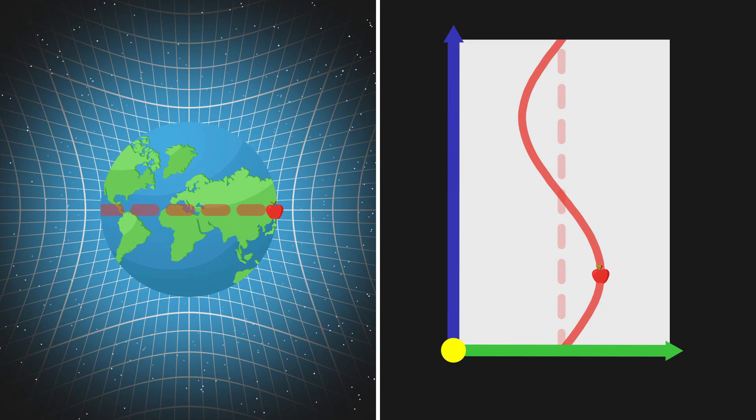However, since spacetime is completely flat at the center, nothing stopped the object there, causing it to overshoot the center. Eventually, the curvature of spacetime pulls it back, resulting in the object oscillating back and forth in simple harmonic motion, much like a pendulum.